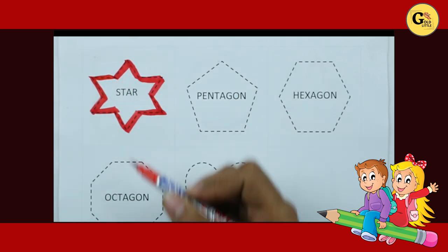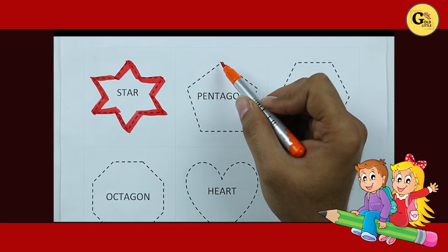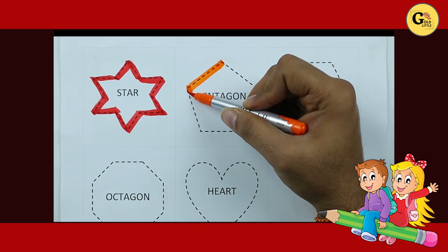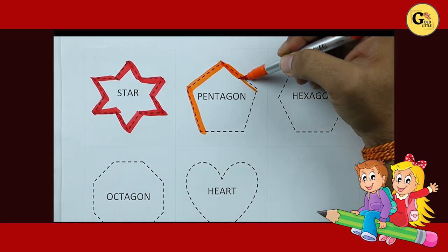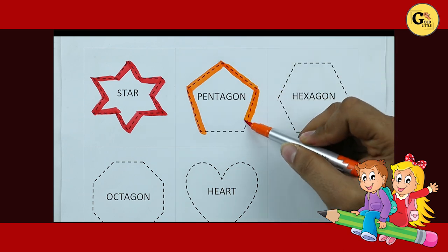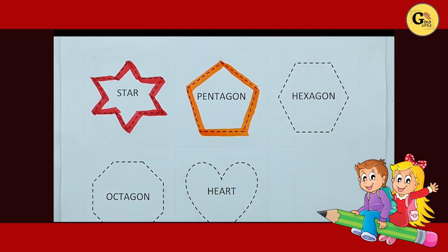Red color star. Pentagon: one line, two line, three line, four line, five line. It's a pentagon.